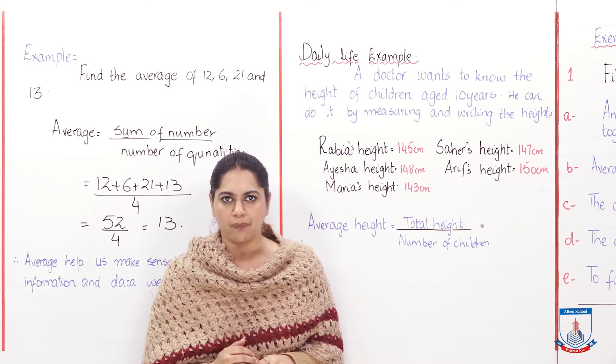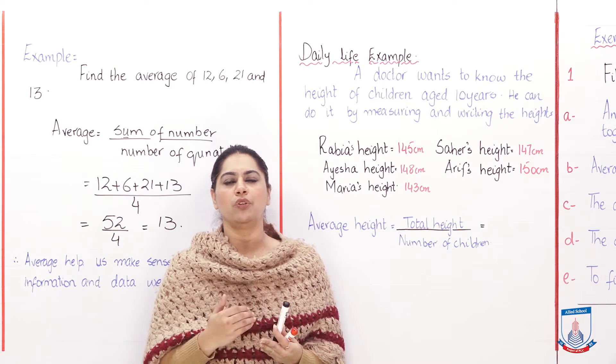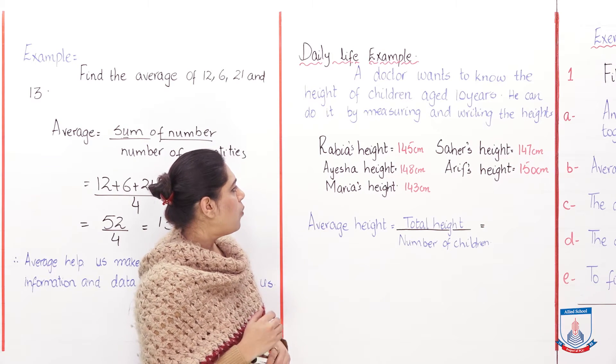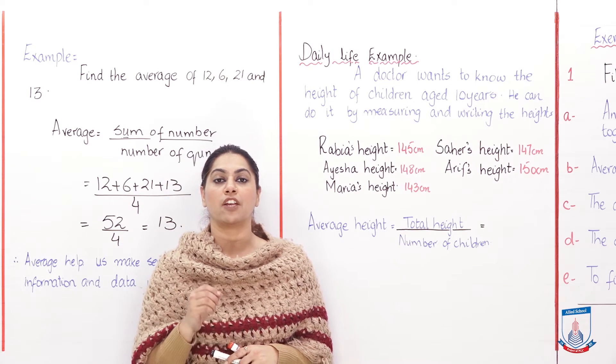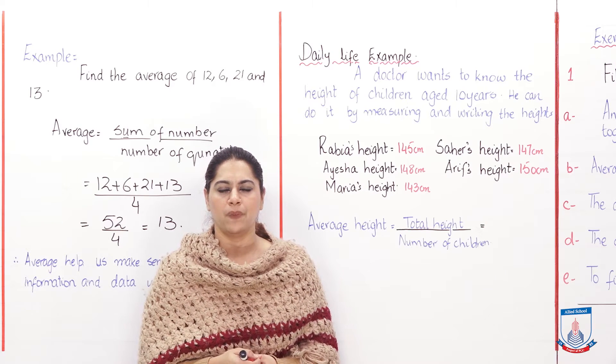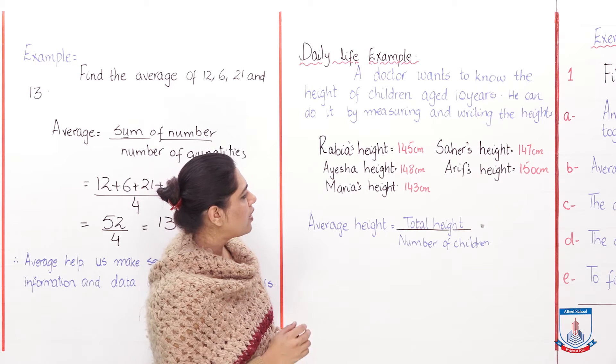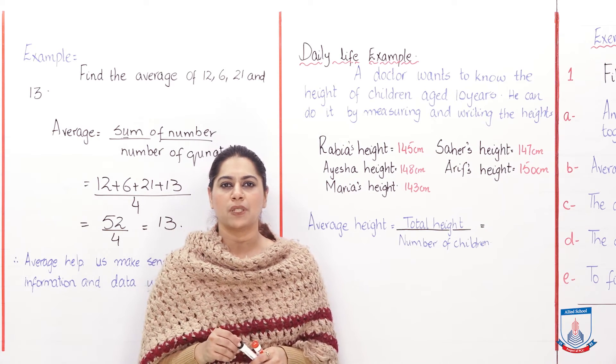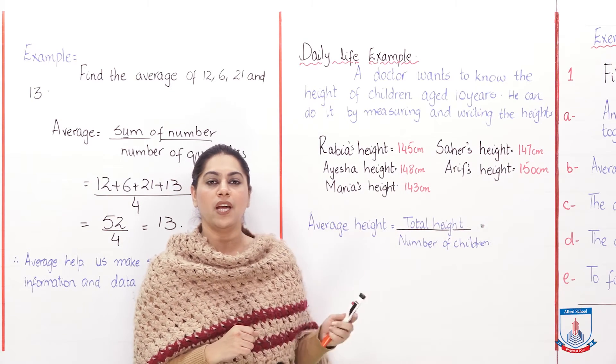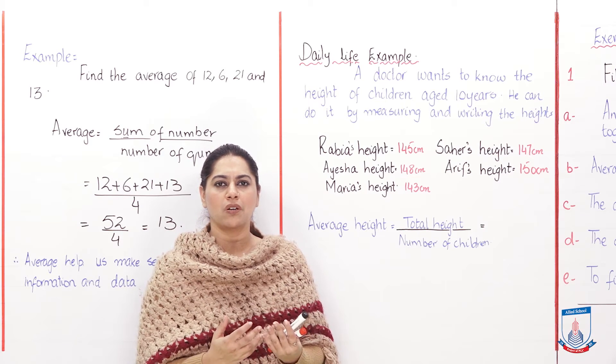There is a doctor who wants to find out the height of 10-year-old children. What will he do? He is going to measure the height and then he is going to note it down on a piece of paper. So what did he do? He selected five children, measured their height and noted it down. Now from this data what can you find out? You can find out that Rabia's height is 145 and Arif's height is 150. But what does this tell you? Arif is 10 years old and Rabia is also 10 years old, but there is a difference in their height. So this information is not helpful for a doctor.